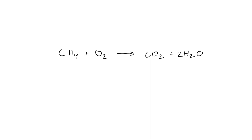So we're going to write a 2 in front of the O₂. When we go back and count the total, we're going to have one carbon on the left, one carbon on the right, four hydrogens on the left, four hydrogens on the right, four oxygens on the left, and four oxygens on the right.